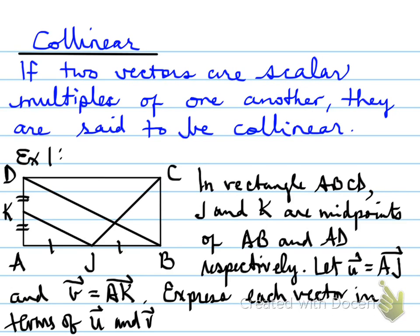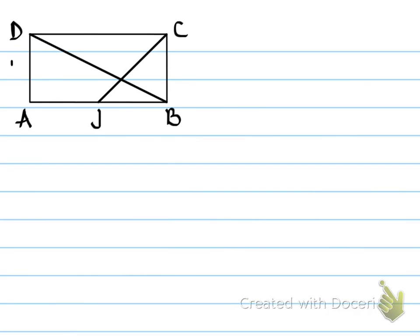So express vector AB, vector DA, vector JK. These are all the different vectors we're going to be looking at. So again, here's our drawing, and there's our u and our v, shown there in red and green.